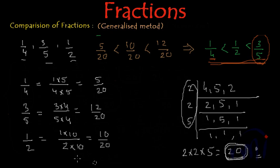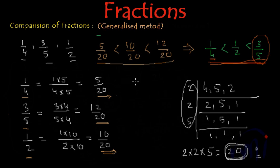In this method also we got the same equivalent fractions: for 1/4 we got 5/20, for 3/5 we got 12/20, and for 1/2 we got 10/20. Now since all denominators are the same, comparison of numerators is easy. 5/20 has the least numerator, then 10/20, then 12/20 — their equivalent simplest fractions are 1/4, 1/2, and 3/5. This is the generalized method: write equivalent fractions so that denominators become the same, then compare the numerators.